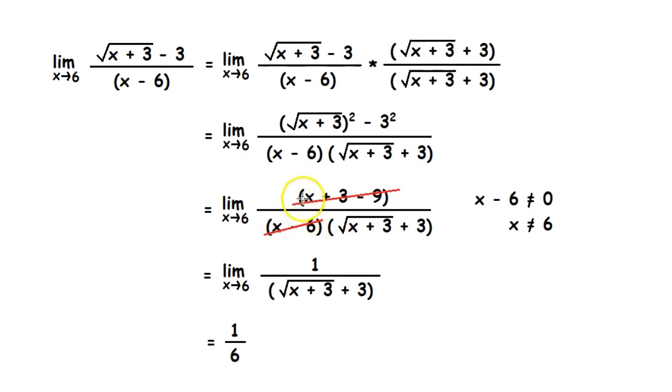So we can cancel off x - 6 from the numerator and the denominator. We must mention here that x - 6 is not equal to 0. So that means x is not equal to 6. So then we can finally use the direct substitution method for 1 over √(x + 3) + 3. This gives us 1 divided by 6.